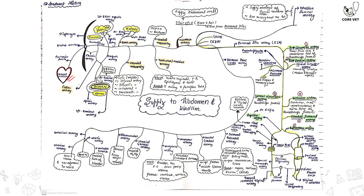The next is the hepatic artery, which obviously supplies the liver. There are two hepatic arteries — the right and the left — and from these arise several other arteries like the cystic artery and the pancreatic artery.